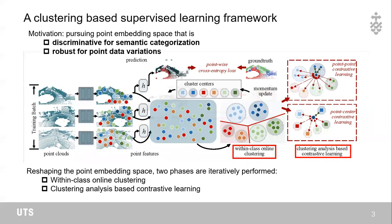Based on the above observations, we propose a clustering-based supervised learning framework. It aims to optimize the point embedding space to be discriminative for semantic categorization and robust for point cloud variations. Specifically, two phases are iteratively performed including within-class online clustering and clustering analysis-based contrastive learning.